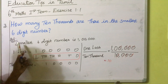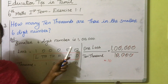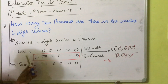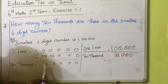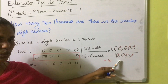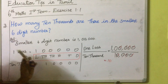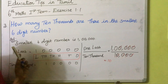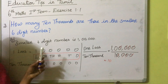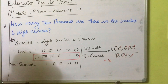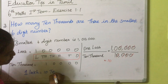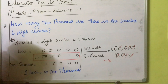Write the smallest six-digit number — that is one lakh. Then write ten thousand. One lakh is just one place to the left of ten thousand. So write one lakh in the numerator and ten thousand in the denominator. The answer comes to ten. So one lakh is equal to ten ten-thousands — that is the answer.